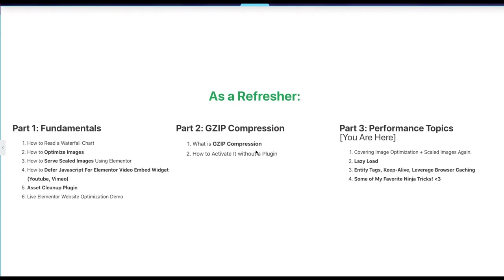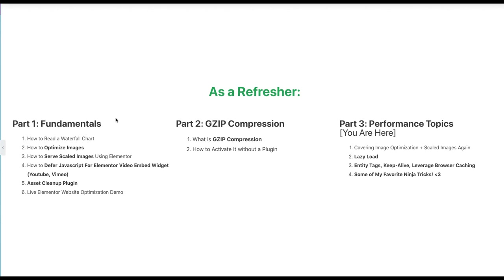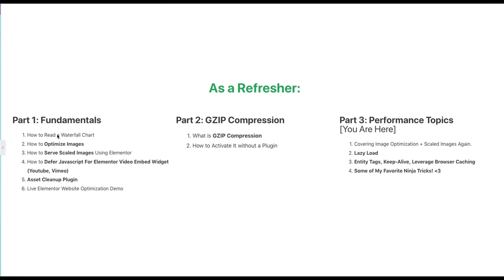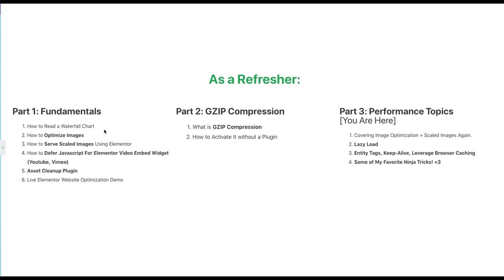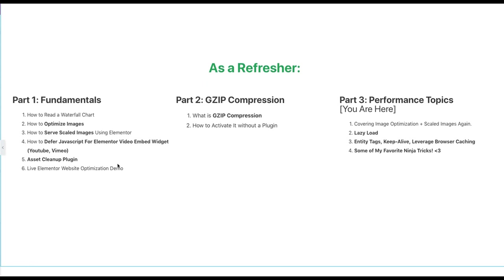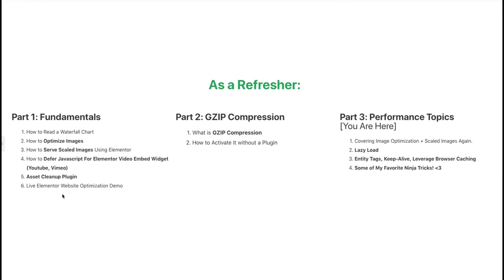As many of you will remember, in my first video we covered some basic WordPress and Elementor performance fundamentals. We looked at how to read a waterfall chart and how to perform a GTmetrics scan. We looked at how to use ShortPixel to optimize images across your WordPress site, and also how to serve scaled images using Elementor's page editor and how to fix those deferred JavaScript recommendations for the video embed widget.